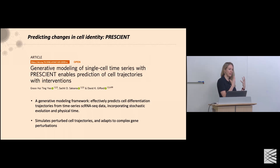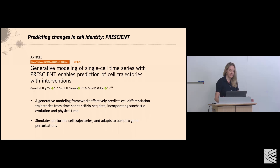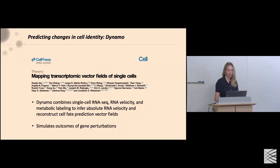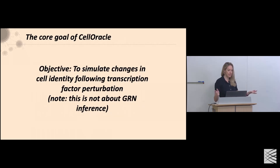Thinking less about cellular responses and moving into predicting changes in cell identity, we are really seeing an explosion in this area. Just to touch on a couple of approaches that caught our attention: Prescient, a generative modeling framework taking time-series single-cell RNA-seq data to simulate perturbed cell trajectories and adapt to complex gene perturbations. And Dynamo, combining single-cell RNA-seq, RNA velocity, and metabolic labeling, with simulation of gene perturbation outcomes. These are the emerging approaches from a couple of years ago, really moving into predicting cell identity changes.